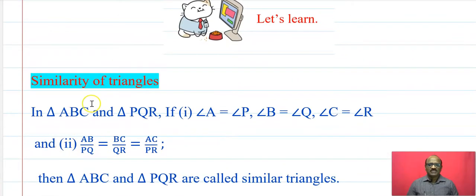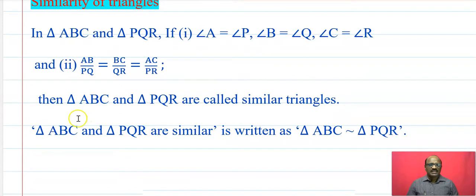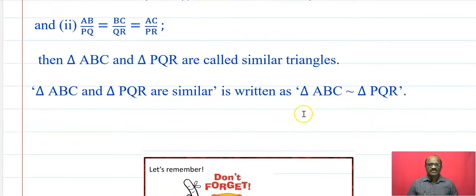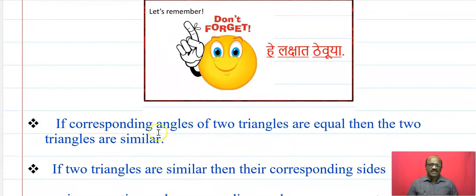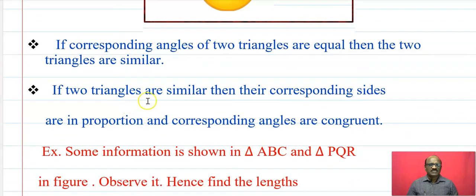Now let us learn what is meant by the similarity of triangles. In triangle ABC and triangle PQR, if angle A equals angle P, angle B equals angle Q, angle C equals angle R, and AB upon PQ equals BC upon QR equals AC upon PR, then triangle ABC and triangle PQR are called similar triangles. If the corresponding angles of two triangles are equal, the triangles are similar, and their corresponding sides are in proportion.